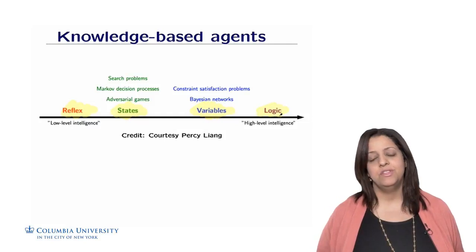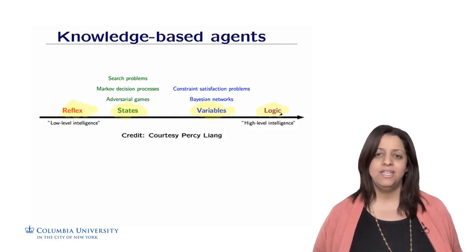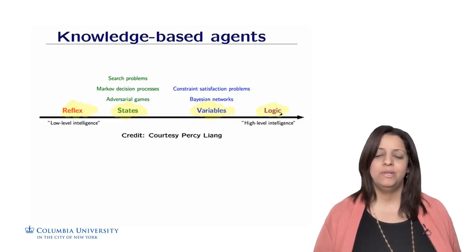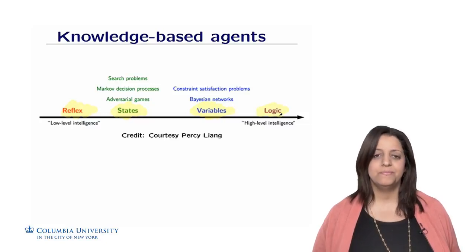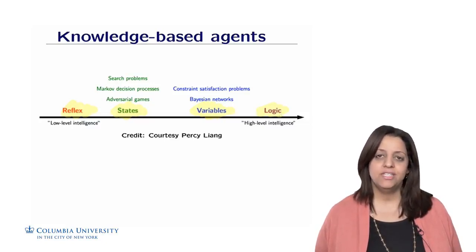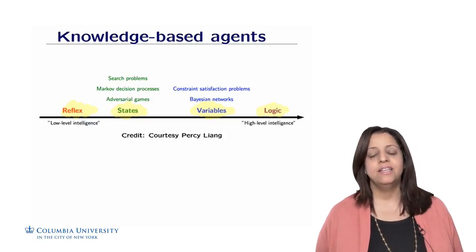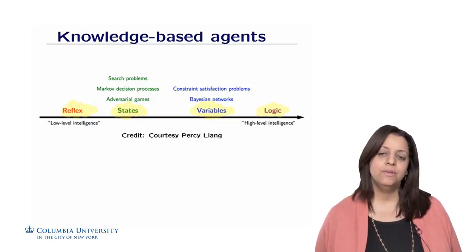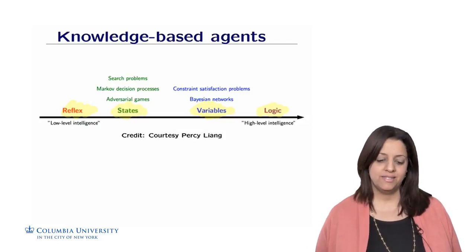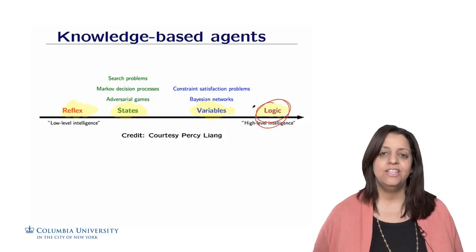With CSPs, for example, we can formalize the problem and then use any kind of solver. Defining the problem is part of the domain knowledge — it embeds domain knowledge in some representation. Inference can then be done with any known inference or learning algorithm. Logical agents combine information embedded in a database called the knowledge base, which they can use to make inference and adapt to new environments. Logical agents sit at the high level of intelligence on the axis.